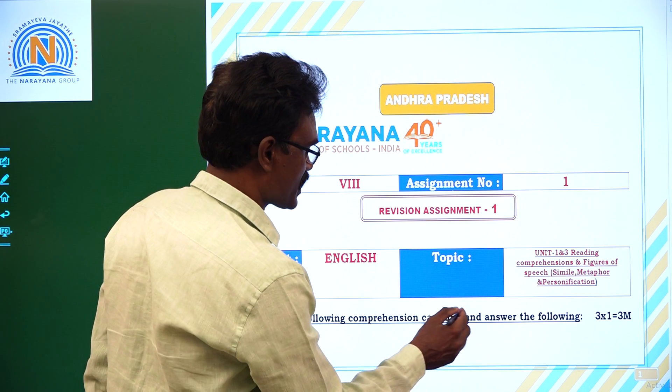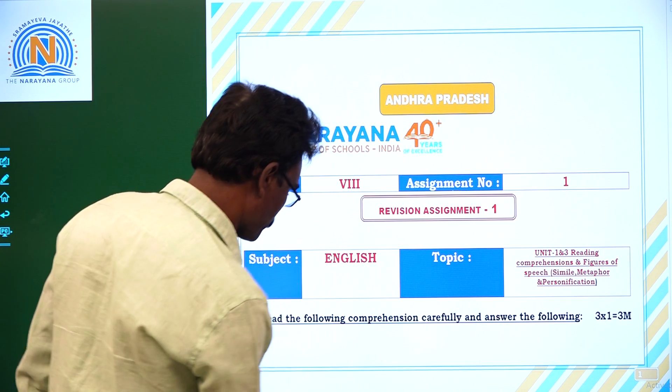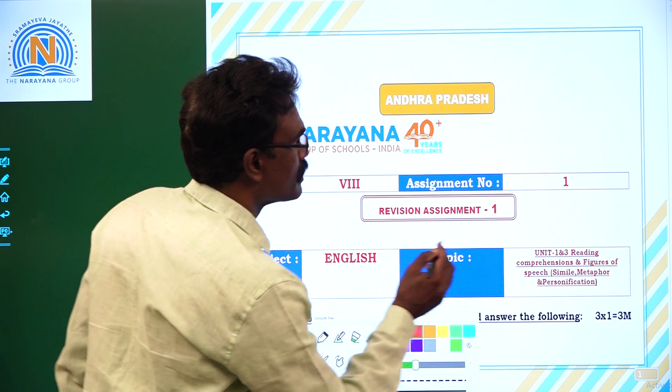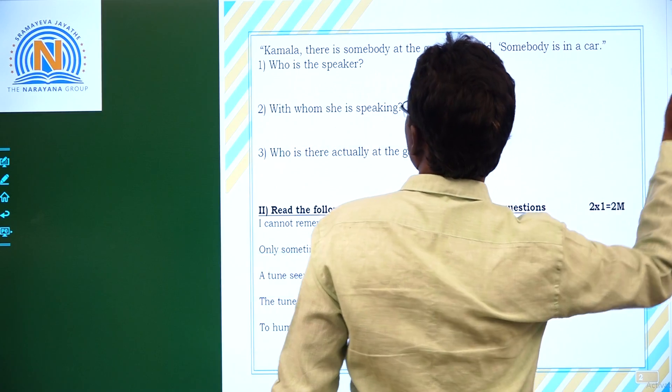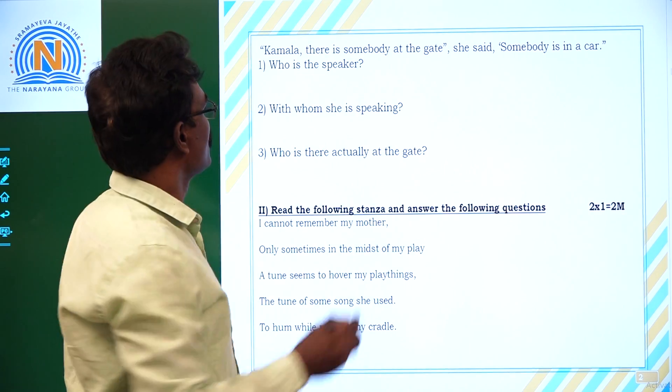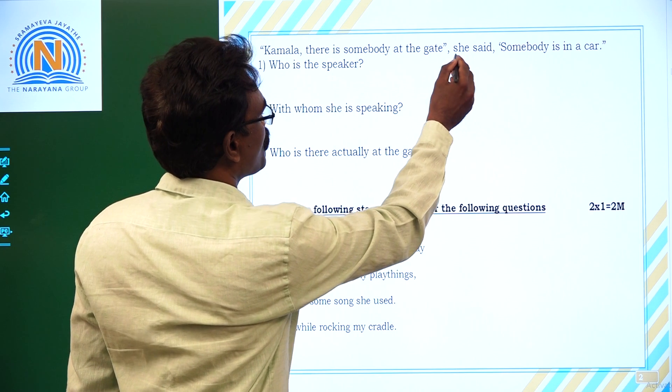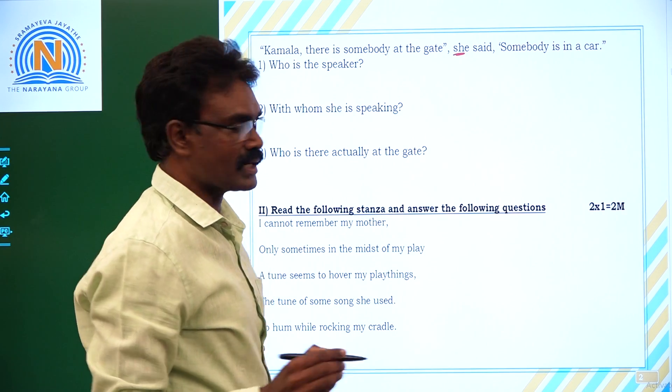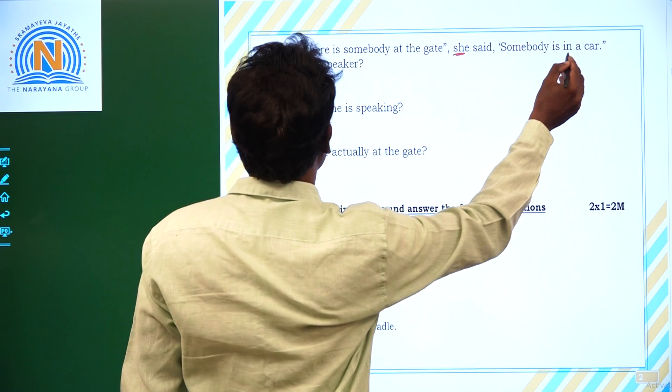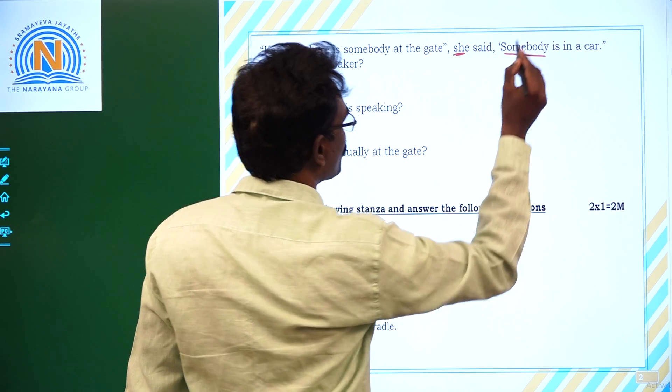Read the following comprehension carefully and answer the following. A very small passage is given. Kamala, there is somebody at the gate, she said. Who is she? Mother. Somebody is in a car. Which is this somebody? Gopi.